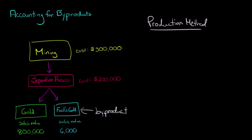So when we mine the gold and we get that fool's gold we're going to recognize that byproduct, the fool's gold, at its net realizable value. I'm just going to abbreviate that NRV, the net realizable value of the fool's gold. So that's the selling price less than a cost to complete the transaction.